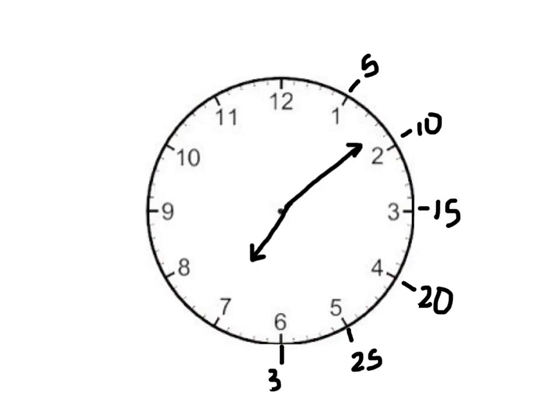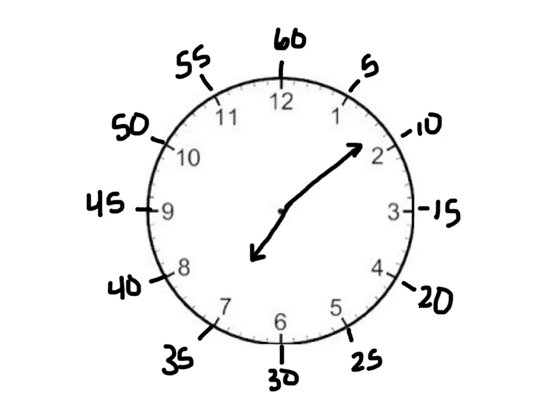The six is thirty, seven is thirty-five, the eight forty, nine is forty-five, ten fifty, eleven is fifty-five, and the twelve is sixty, and then we start all over again as we go around the clock, again counting our minutes.